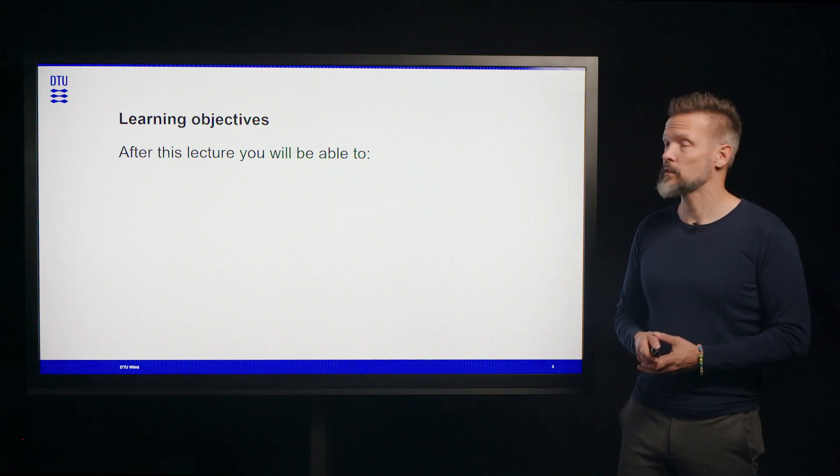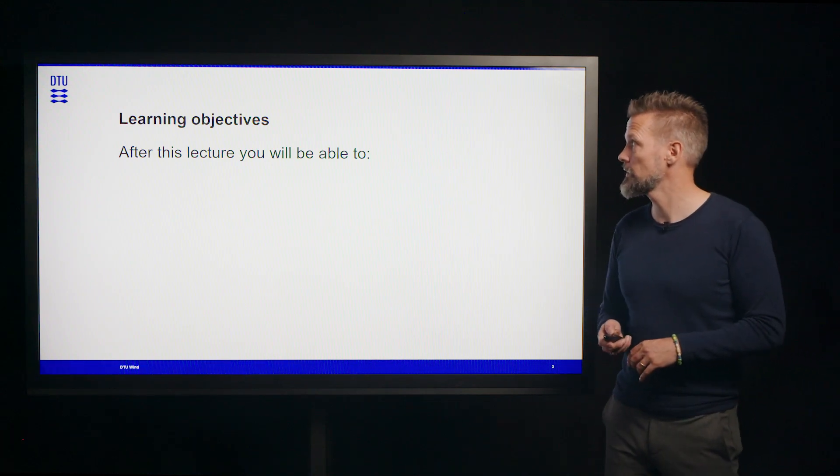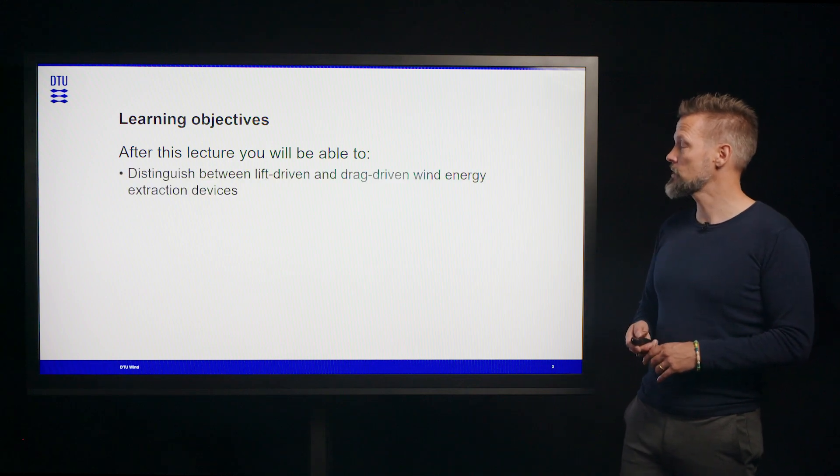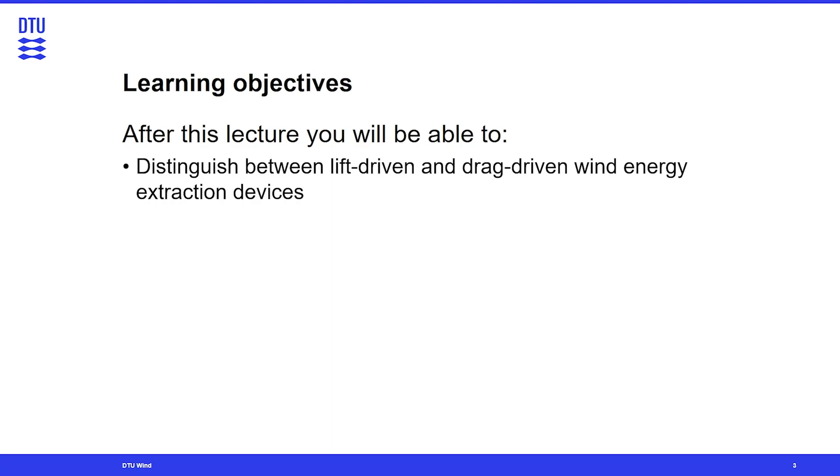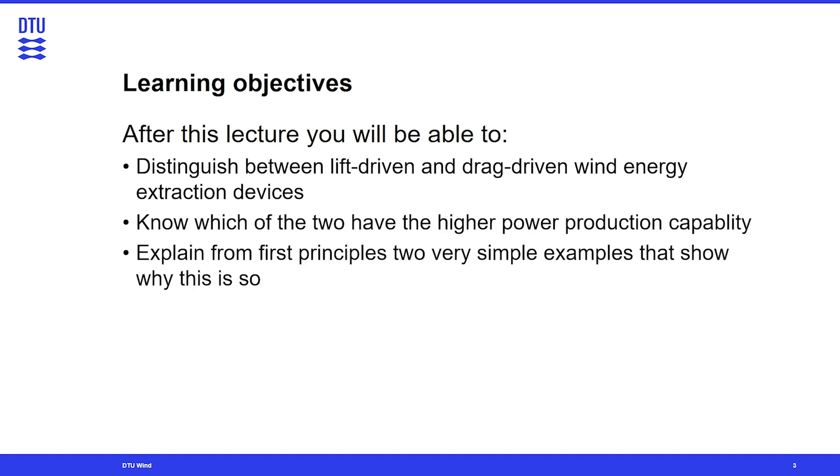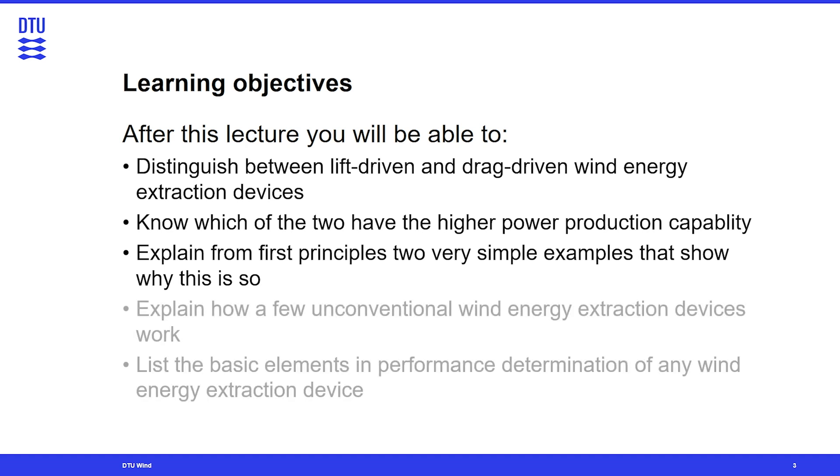The learning objectives of this lesson is that you will be able to distinguish between lift and drag driven wind energy extraction devices. You will know which of the two have a better power production capability and you will be able to explain from first principles two really simple examples that show why that is. And then in part two I will explain more about a few selected unconventional wind energy devices and also you'll be able to list the basic elements that go into this determination of any wind energy extraction device.